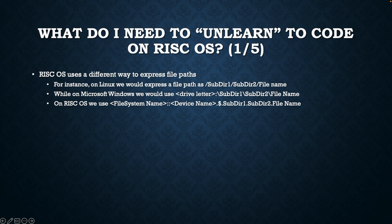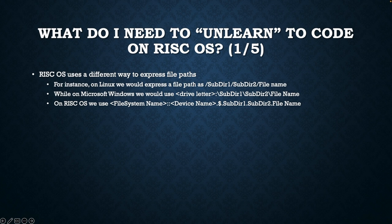RISCOS uses a different way to express file paths. On Linux we would express a file path as backslash subdir backslash subdir until the file name. On Microsoft Windows we would use drive letter colon slash subdir slash subdir until the file name. On Windows we also have the concept of file extension to express the typology of a file, which on RISCOS is replaced by the concept of file type. On RISCOS we use: file system name colon colon device name dot dollar symbol dot subdir dot subdir until the file name.